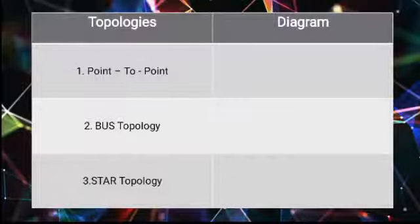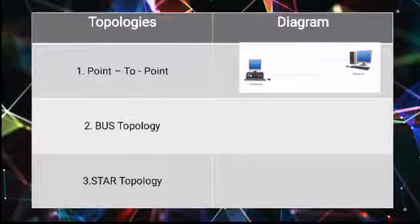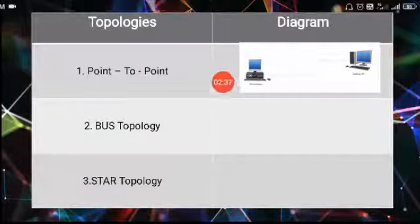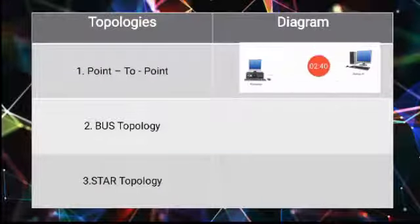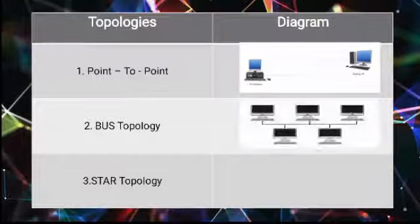The first topology we will discuss is point-to-point topology. Point-to-point topology is the simplest form of network structure in which two nodes are directly connected — this is the first node and this is the second node, and they are directly connected to each other.